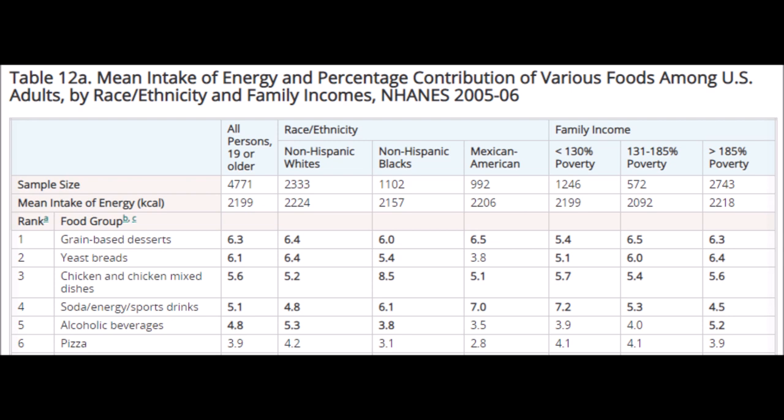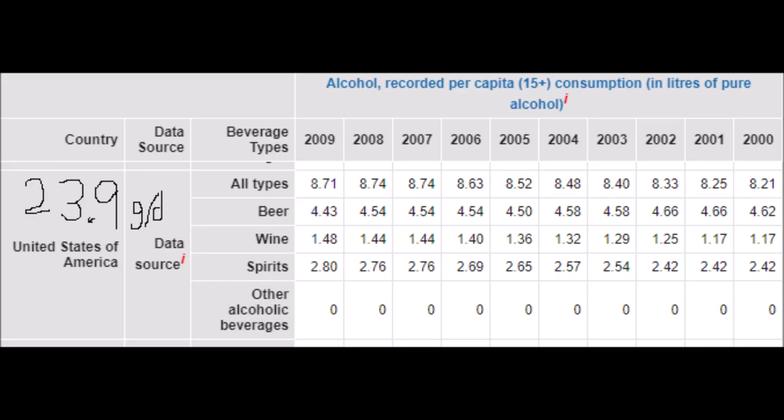We can see from the NHANES data that alcoholic beverages account for 4.8 percent of calories, and they weren't included as a percentage of the diet in the low carb diet score. Is this honest reporting? Disappearance data puts per capita consumption in America at 23.9 grams a day — that's two standard drinks of wine, two shots of spirits, and so forth. People do drink a lot of alcohol.